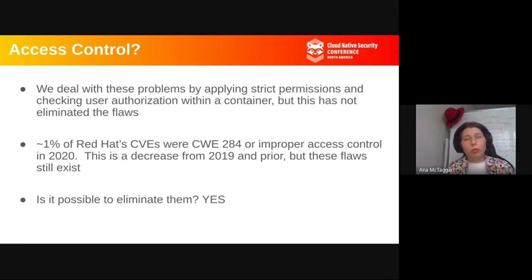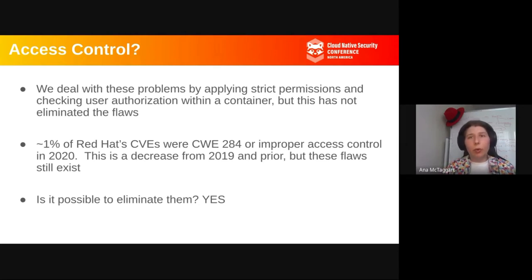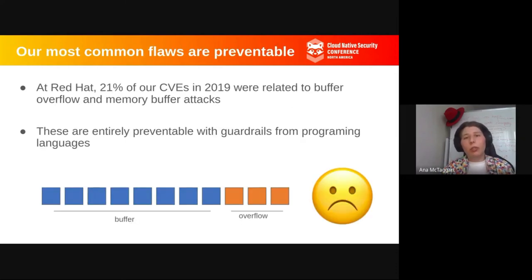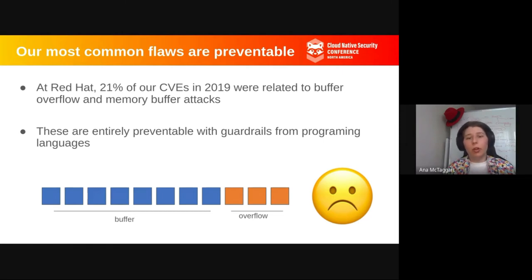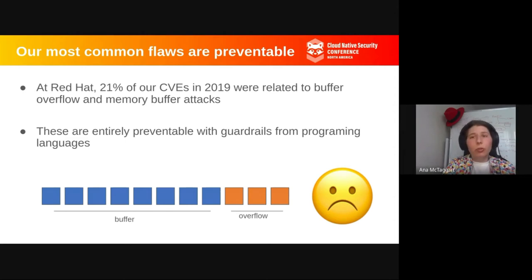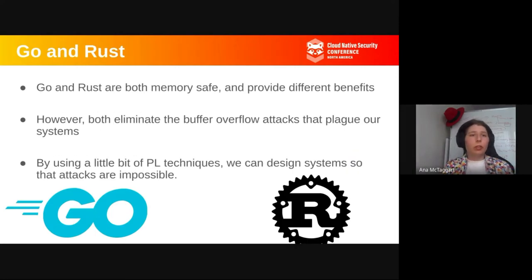We could eliminate these flaws if we had formal guarantees that only certain users are authorized to access particular things. We don't have a formal bulletproof guarantee — just software that roughly provides a general way to prevent these flaws. The most common and overwhelming source of CVEs are related to buffer overflow and memory buffer attacks — 21% of CVEs in 2019. These are entirely preventable with guardrails from programming languages. There is no need to have a buffer overflow in 2021.